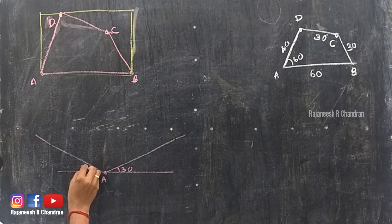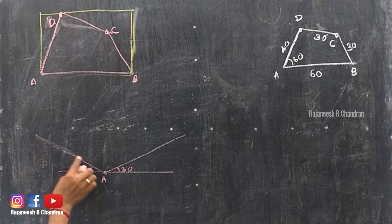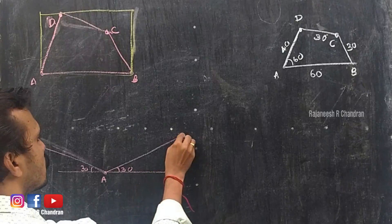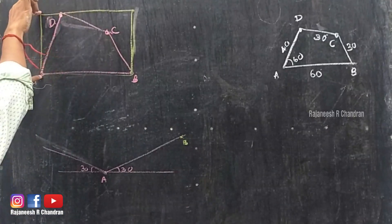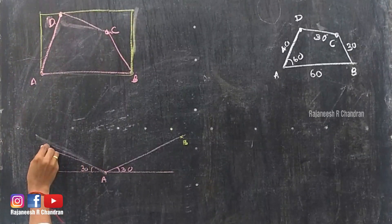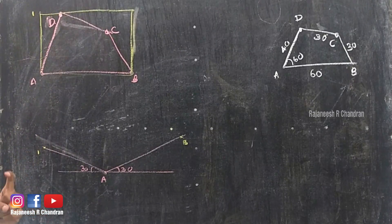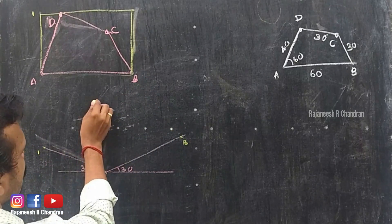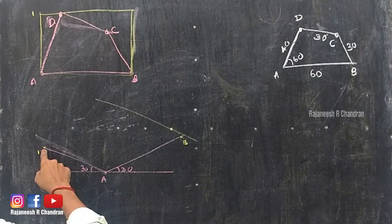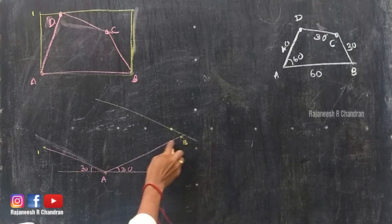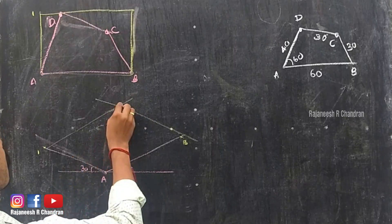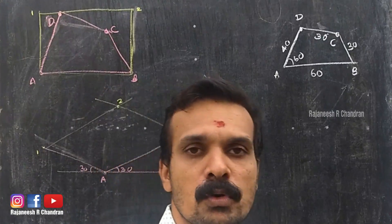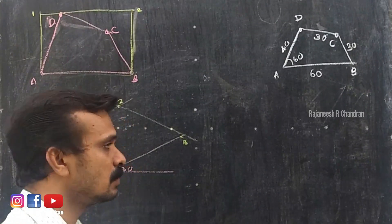Here also draw a line at an inclination of 30 degrees, so both axes are completed. Take this distance and mark here so that we have obtained B. Take this distance and mark here to obtain point 1. Through this point draw a line parallel to isometric Y; similarly through point 1 draw a line parallel to isometric X, so we have obtained point 2. The isometric view of the rectangle is completed.